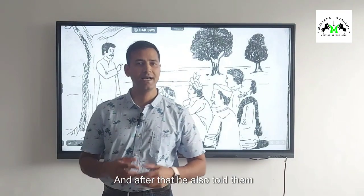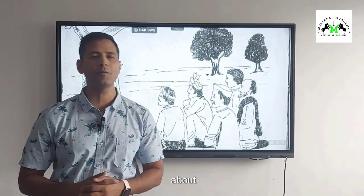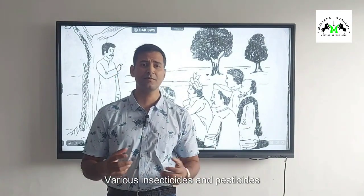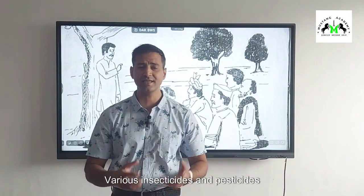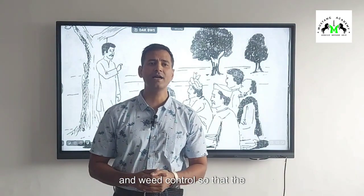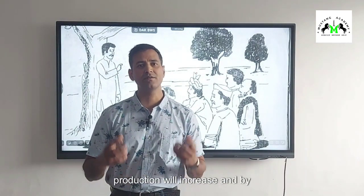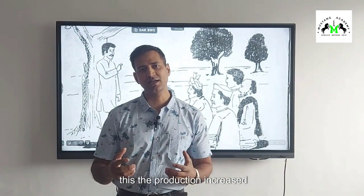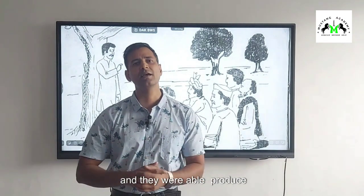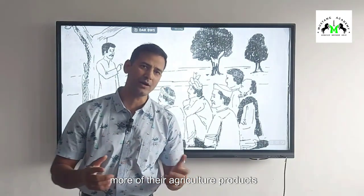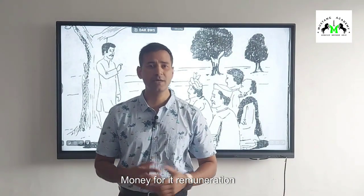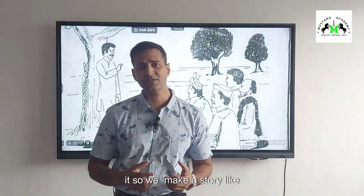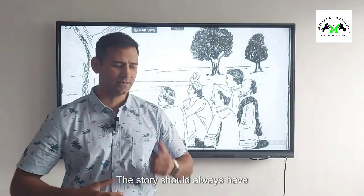They also used sprinkle irrigation, in which water is optimized and less water is required, so water is not wasted. After that, Ram also told them about various insecticides, plants, and pesticides and weed control, so that production would increase. By this, the production increased and they were able to produce more of their agricultural products and got good returns for it.